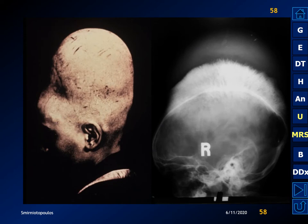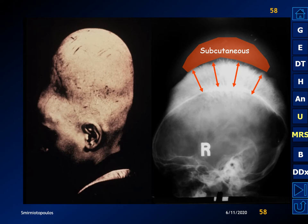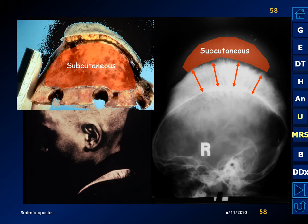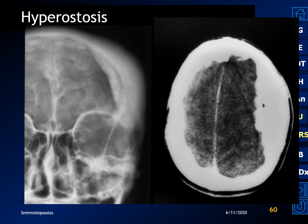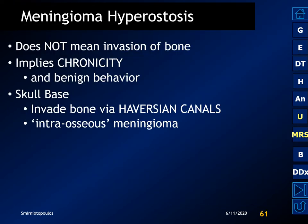Here's a dramatic example of hyperostosis in a 16-year-old girl with a spiculated hair-on-end appearance in the calvarium, widening of the diploic space, and extension of the tumor into the scalp. These features, as ominous as they appear, do not predict a more aggressive histology and can be seen with ordinary grade 1 meningiomas. There's also a ground-glass pattern of hyperostosis that can be confused with fibrous dysplasia. Hyperostosis does not always mean invasion of bone. In the skull base the meningioma may invade bone using the Haversian canals — sometimes called an intraosseous meningioma.